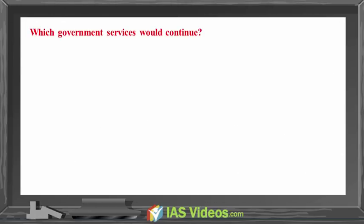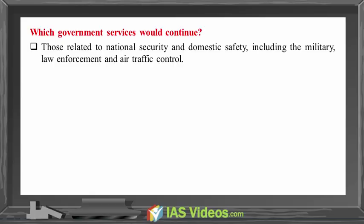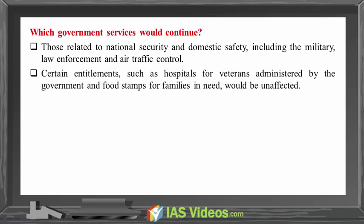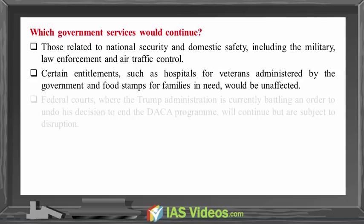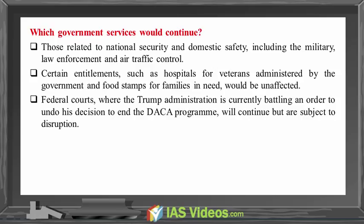Which government services would continue? Those related to national security and domestic safety, including the military, law enforcement, and air traffic control. Certain entitlements such as hospitals for veterans administered by the government and food stamps for families in need would be unaffected. Federal courts, where the Trump administration is currently battling an order to undo his decision to end the DACA program, will continue but are subject to disruption.